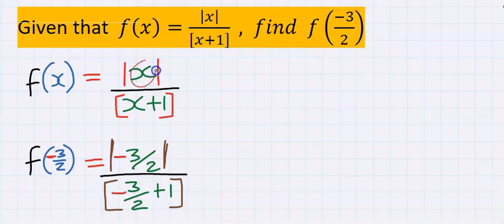Hence, instead of x, I'm going to have minus 3 over 2.